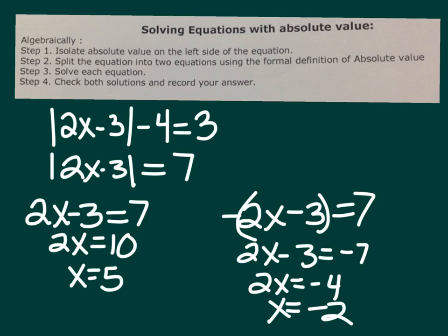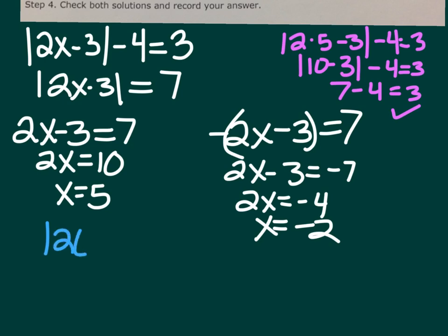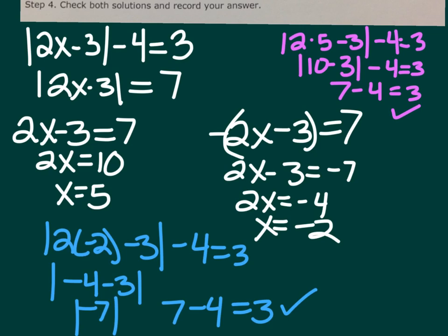Checking x equals 5: the absolute value of 2 times 5 minus 3, minus 4, equals 3. That's the absolute value of 10 minus 3, which is 7, minus 4, equals 3. True. Checking x equals negative 2: the absolute value of 2 times negative 2 minus 3, minus 4. 2 times negative 2 is negative 4; negative 4 minus 3 is negative 7; absolute value of negative 7 is 7; 7 minus 4 equals 3. Both work. The solution is x equals negative 2 and x equals 5.